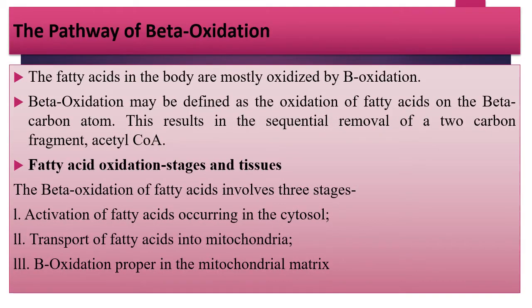The fatty acids in the body are mostly oxidized by beta oxidation. It may be defined as the oxidation of fatty acid on the beta carbon atom. This results in the sequential removal of a 2-carbon fragment, acetyl-CoA. The beta oxidation of fatty acid involves three stages: Stage 1, activation of fatty acid occurring in the cytosol; Stage 2, transport of fatty acid into mitochondria; and Stage 3, beta oxidation proper in the mitochondrial matrix.